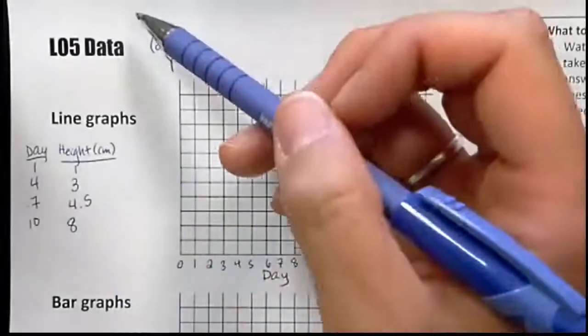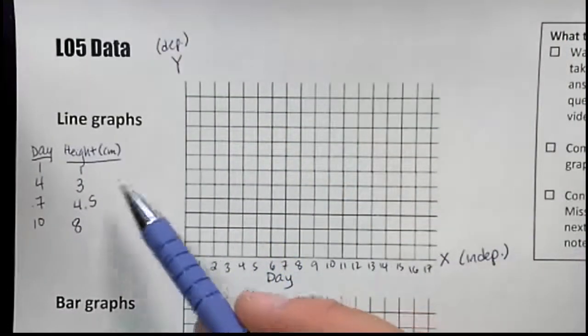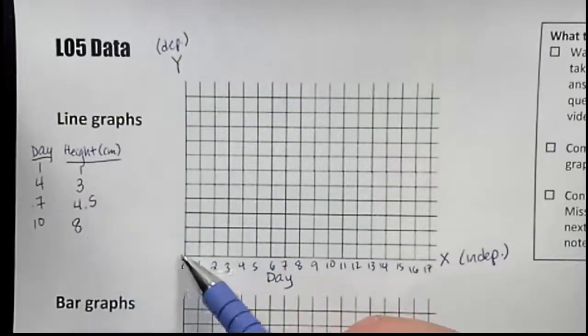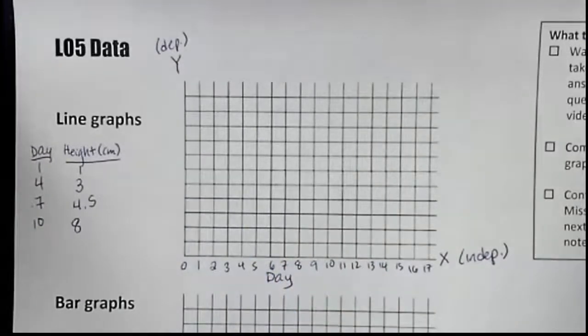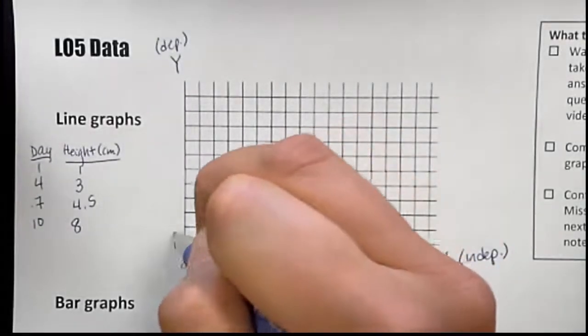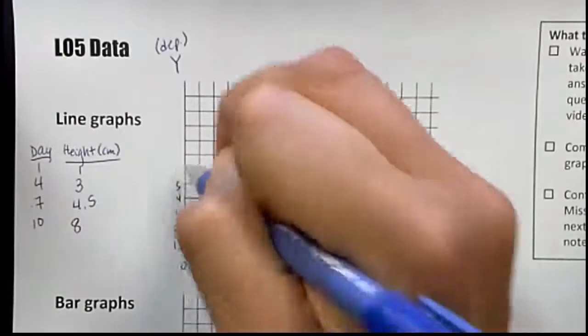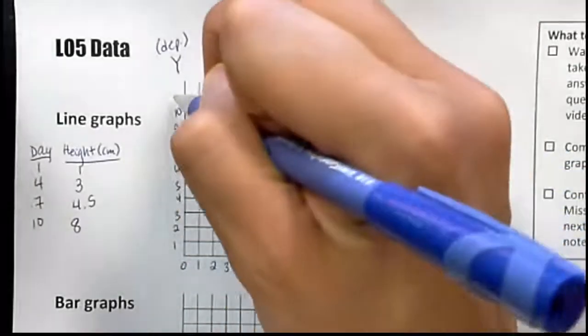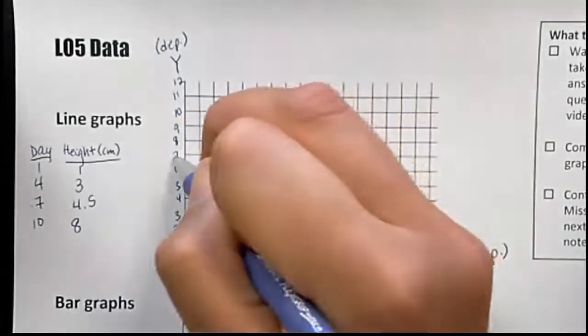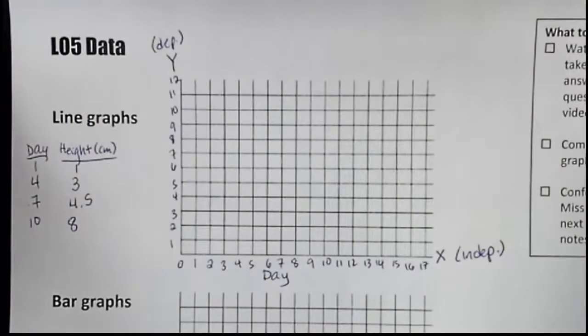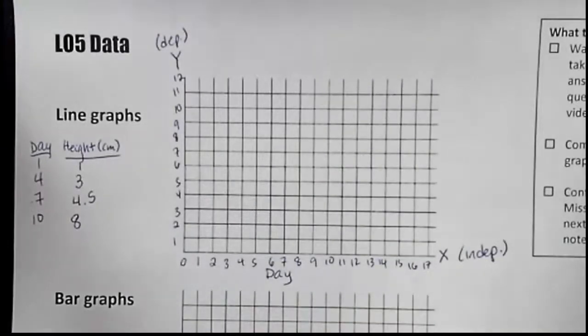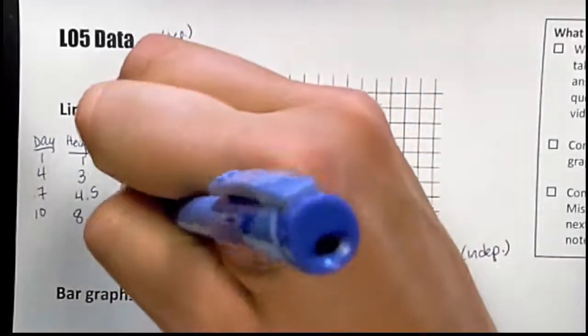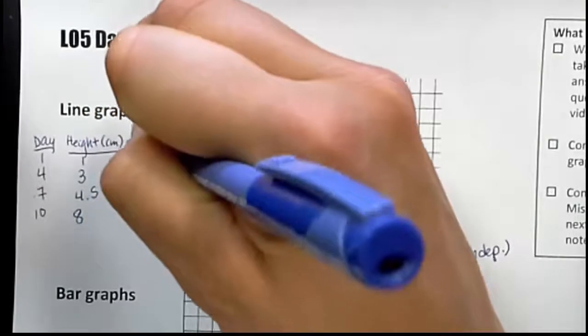The y-axis going up, we have from 1 to 8 would be our highest number. And I can already see that there's not a lot of boxes here, so I'm just going to go by ones. Now, we need to label this axis. So what does this represent? It represents height in centimeters.